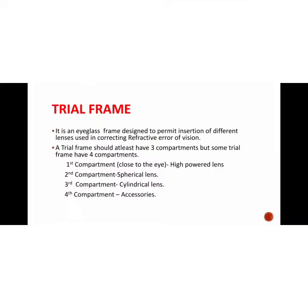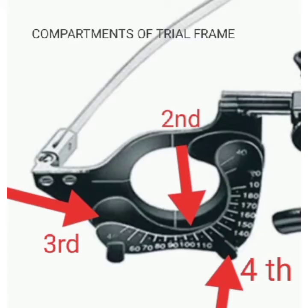In the fourth compartment we insert accessories like prism, occluder, pinhole, and red and green goggles. This image shows the compartments in the trial frame.